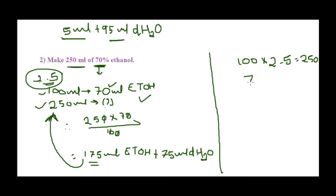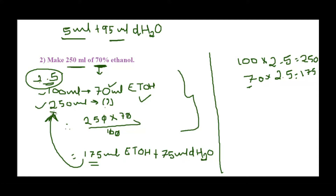So 100 × 2.5 = 250 ml, meaning I scale the volume 2.5 times. Therefore 70 × 2.5 = 175 ml of ethanol — the same answer. I find the scaling method easier: first figure out the amount for 100 ml, then determine the scale factor. Both methods give the same result.